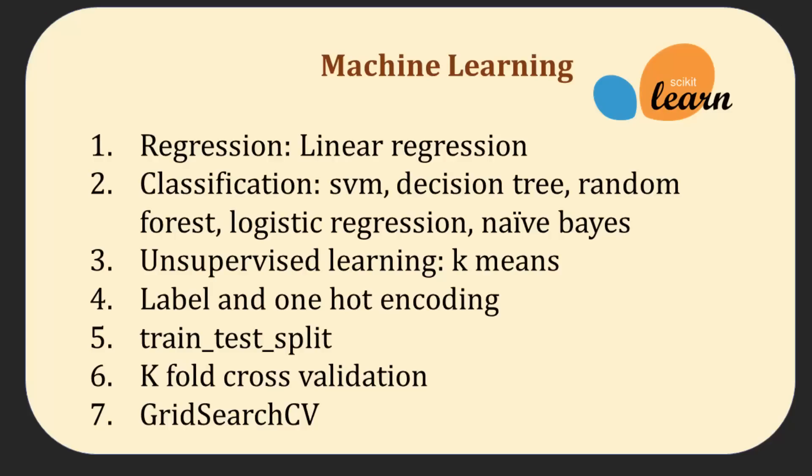Then comes machine learning. As a data scientist you will be building machine learning models, and if you're using Python, scikit-learn is the library everyone uses. You need to know how to build regression and classification models — these are supervised learning techniques. You can also learn unsupervised learning techniques such as k-means. To convert text data into numbers, you need encoding techniques such as one-hot encoding or label encoding. Train-test split, k-fold cross-validation, GridSearchCV — all are essential for evaluating model performance, selecting the best model, and doing hyperparameter tuning.